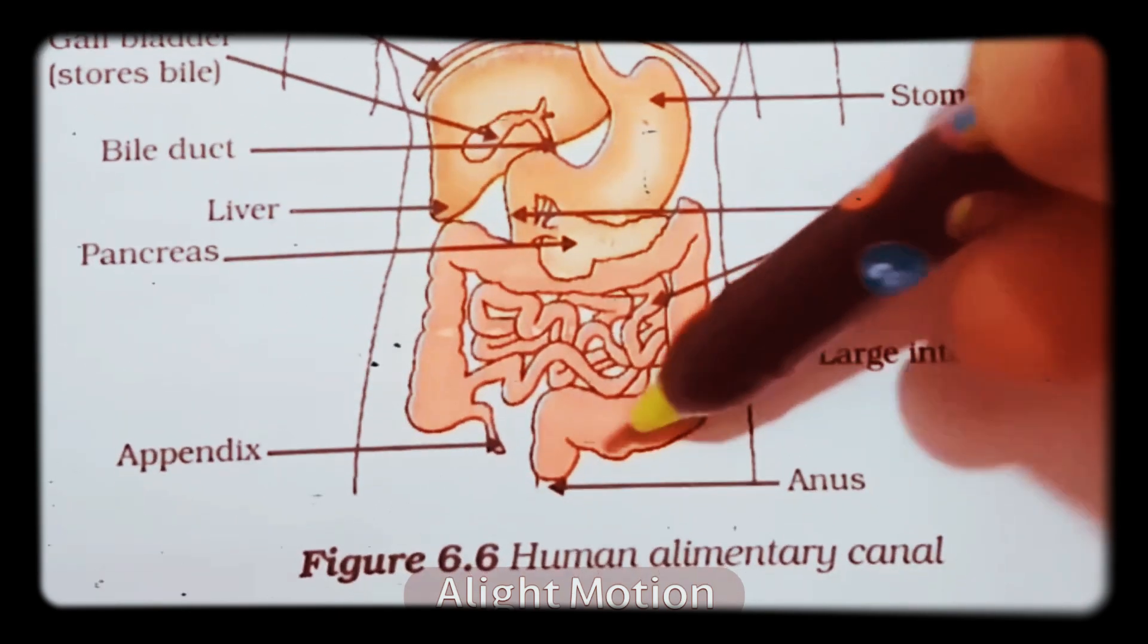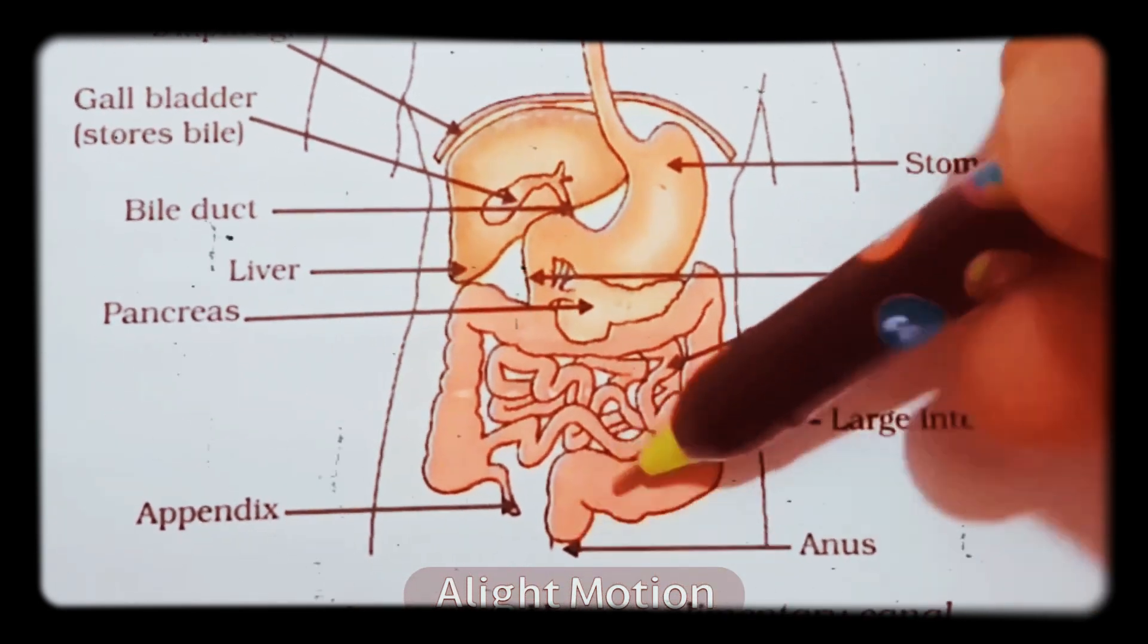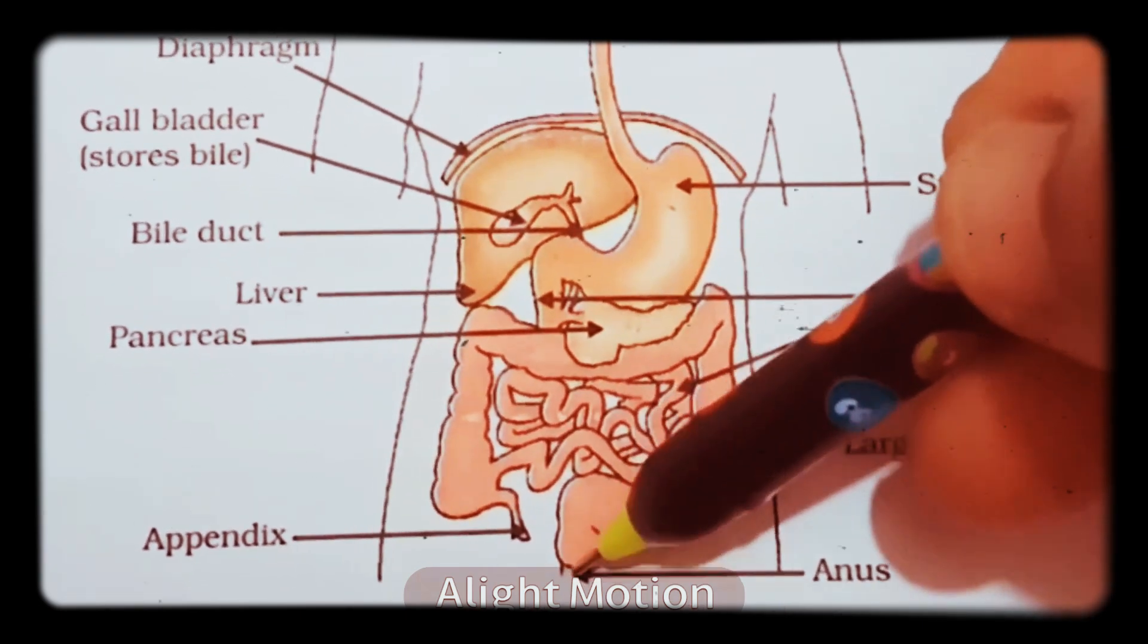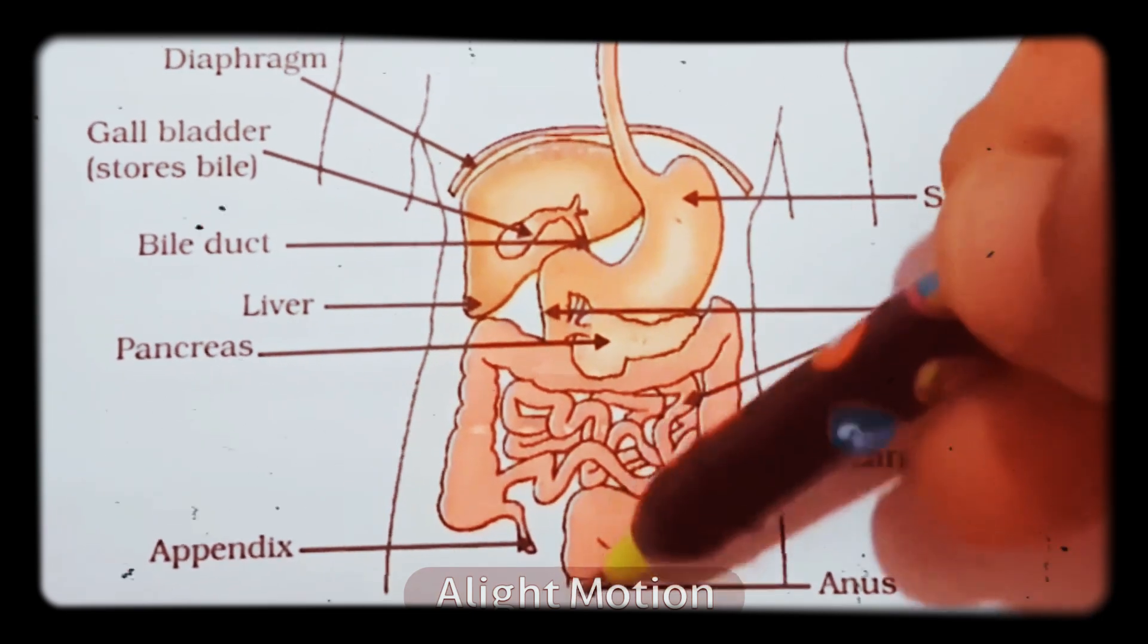Then it is stored in the bag-like structure called the rectum. After it is filled, it automatically connects to the brain and immediately you feel urgency. With the opening of the anal sphincter, the anus opens and waste is removed.